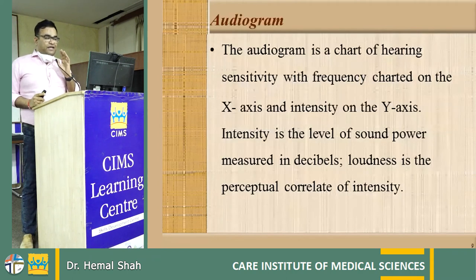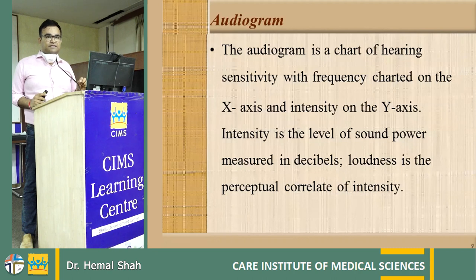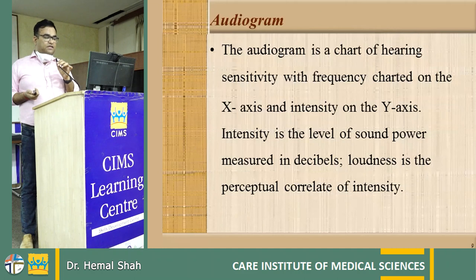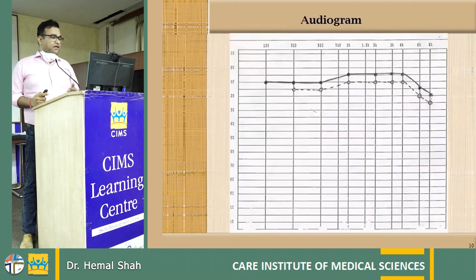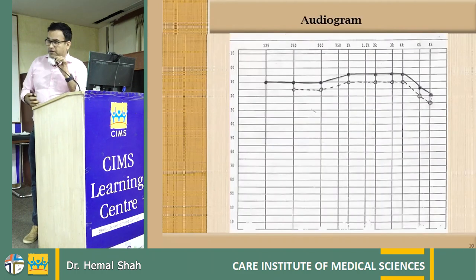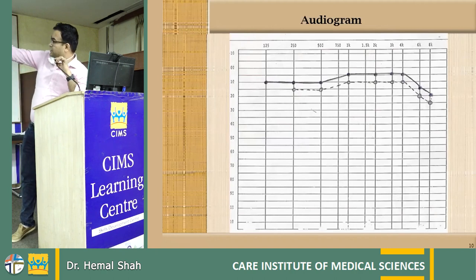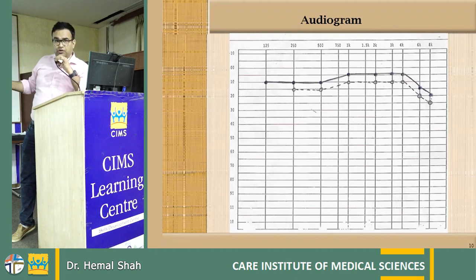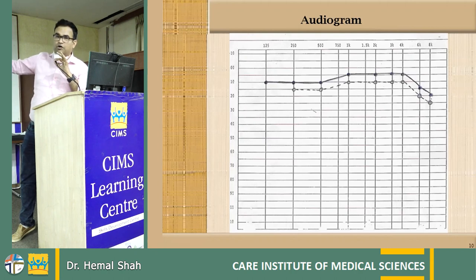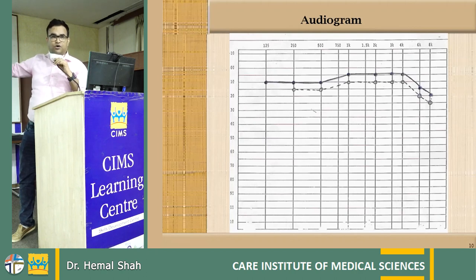The audiogram is a chart of hearing sensitivity with frequency charted on the x-axis and intensity on the y-axis. Intensity is the level of sound power measured in decibels, and frequency is the perceptual correlate of intensity. This is the normal audiogram — you can see both lines, one for air conduction and one for bone conduction. In a normal audiogram, both lines are parallel with no gap between them. Whenever you see such an audiogram, it is normal.